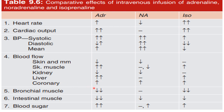Bronchial muscles: relaxation occurs with adrenaline and isoprenaline due to beta-2 receptor stimulation, causing bronchodilation. No bronchodilation occurs with noradrenaline as it does not stimulate beta-2 receptors. Intestinal muscles: decreased peristalsis and increased sphincter tone occur. Blood sugar level is increased due to gluconeogenesis in muscle and liver.